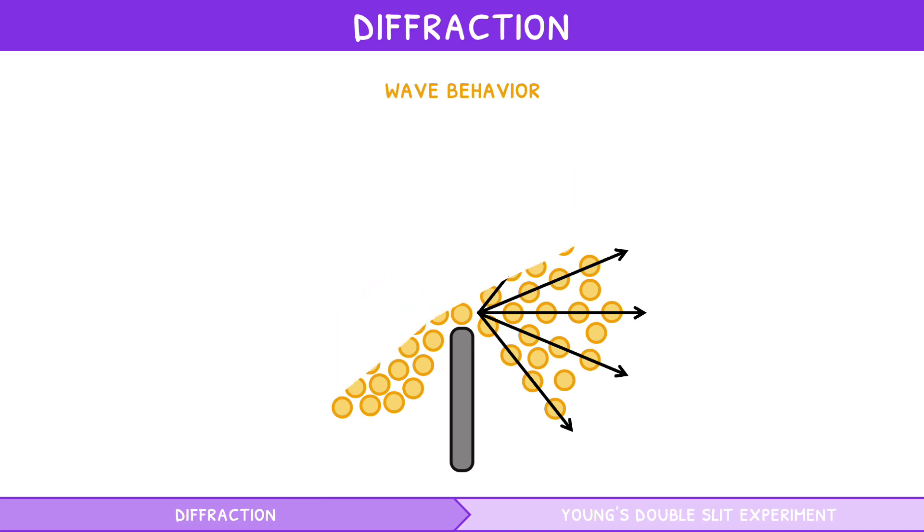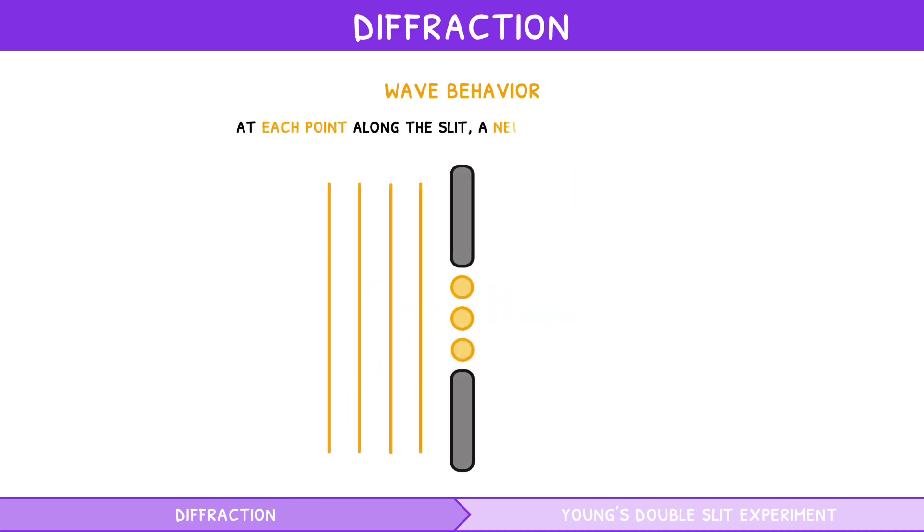This is very similar to our diffraction patterns, as at each point along the slit, a new wave source forms, called a point source. Since this happens many times along the slit, the resulting waves collide, that is, they interfere.